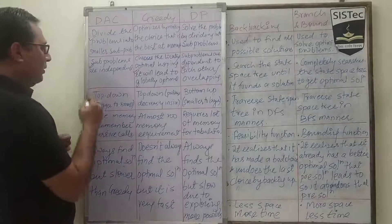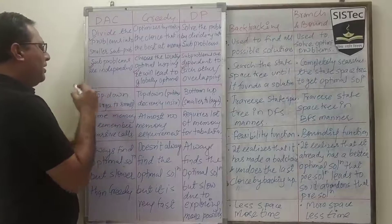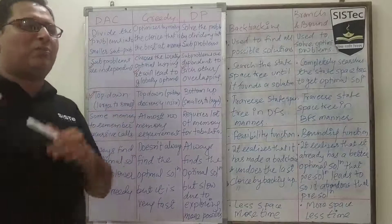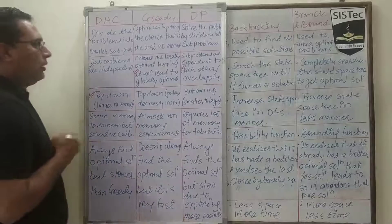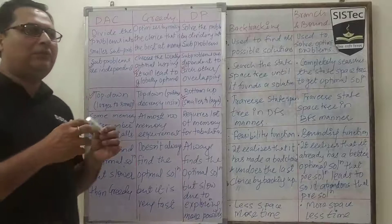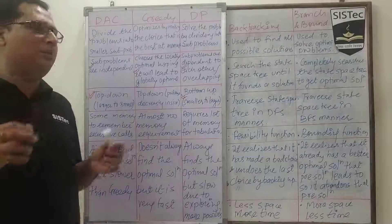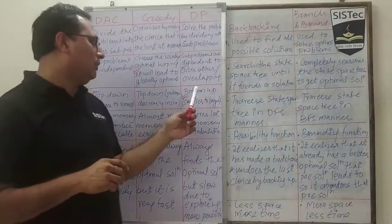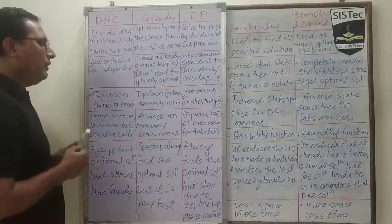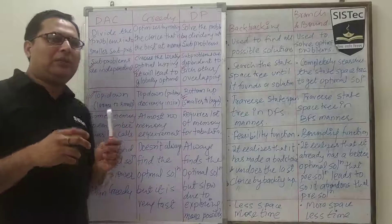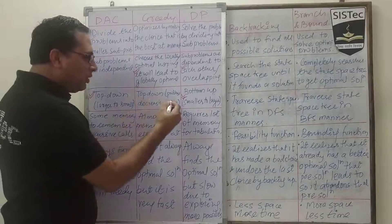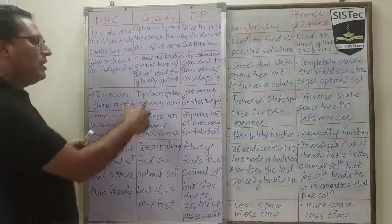Divide and conquer uses a top-down approach — we start from the larger problem and then go to the smaller one. In the case of dynamic programming, it uses a bottom-up approach — we start from the smallest and explore all possibilities, going from smaller to larger. In the case of greedy, we take decisions one by one at a time using a top-down approach where the problem size is decreasing.